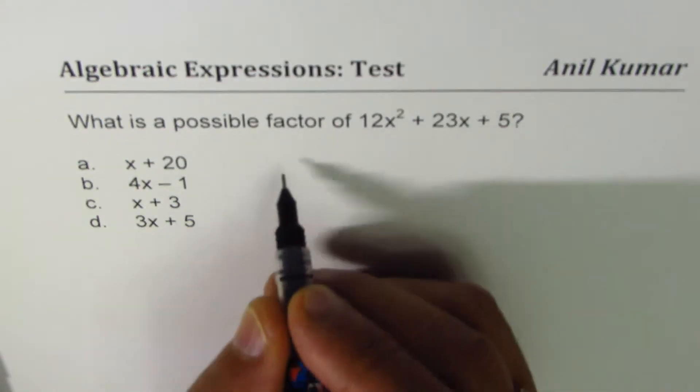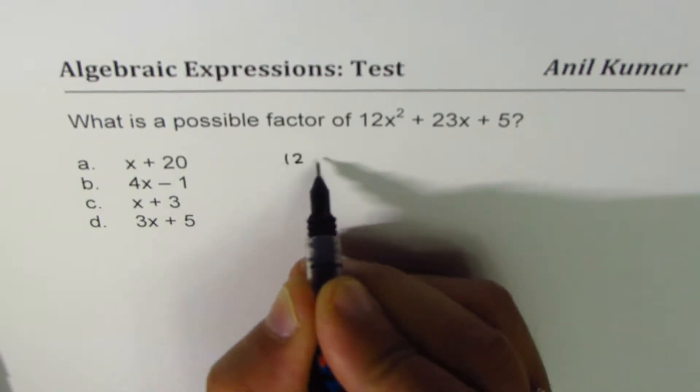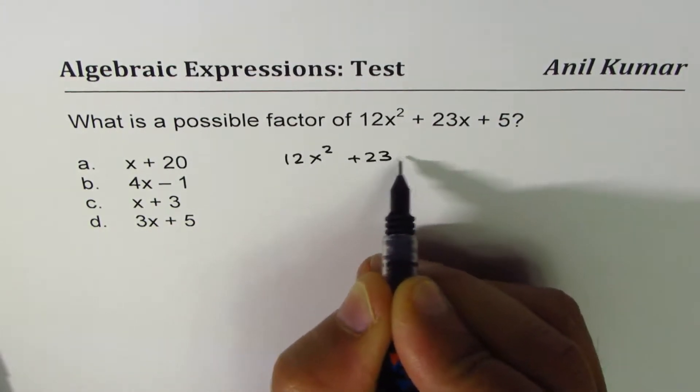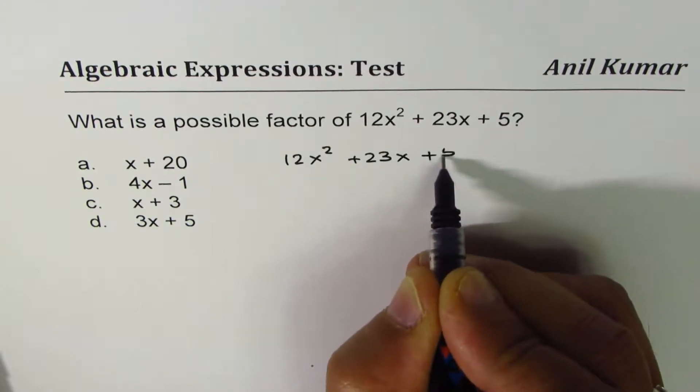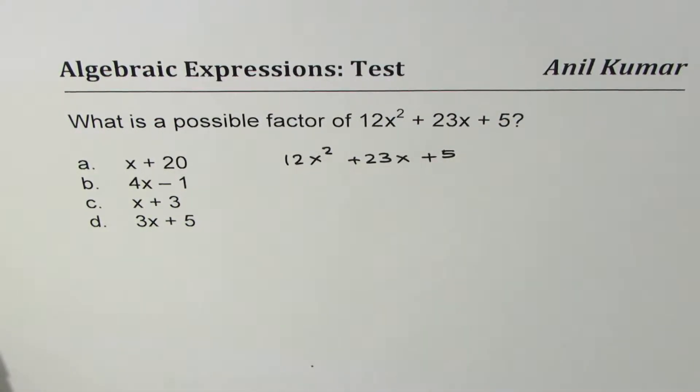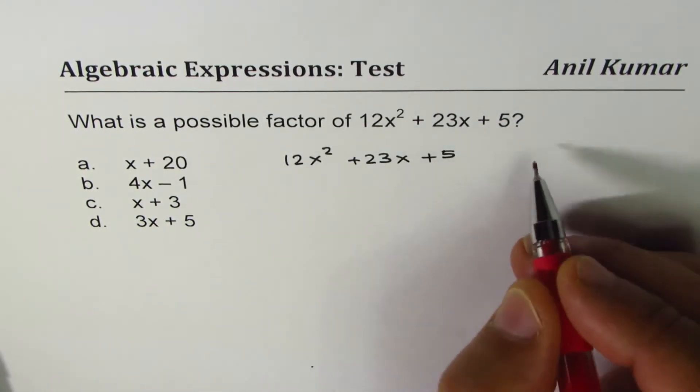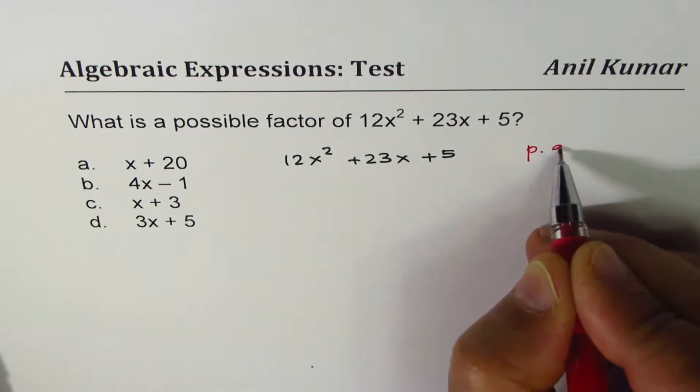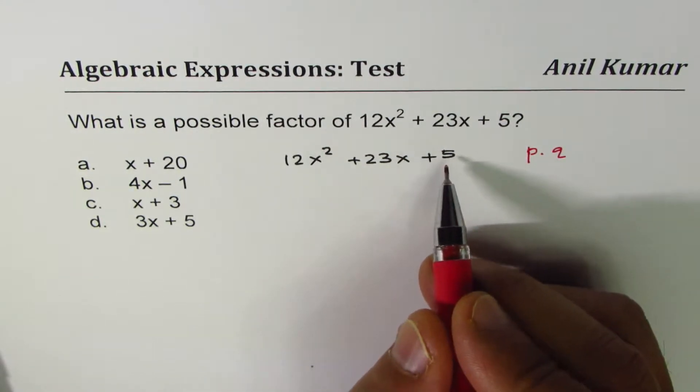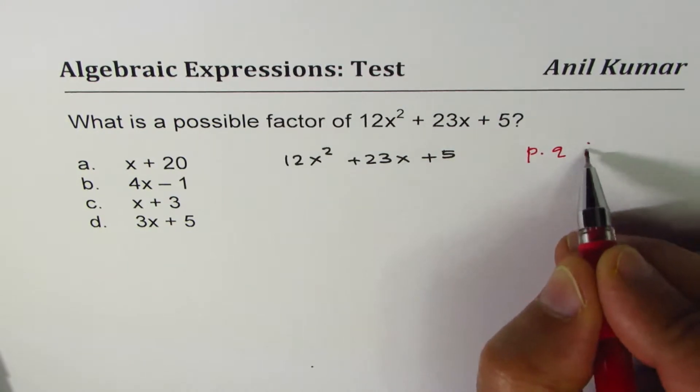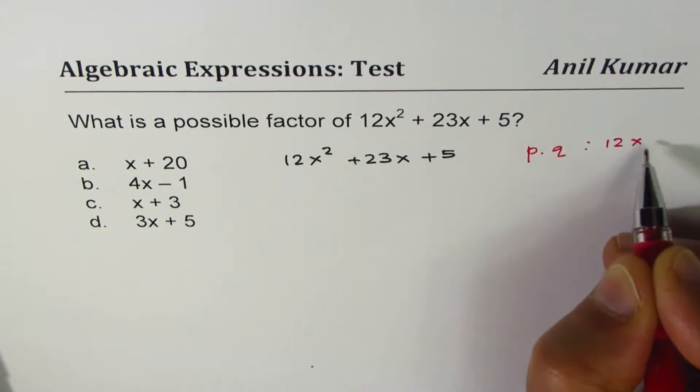So what we have here is 12x squared plus 23x plus 5. We are looking for two numbers whose product is, let's say P and Q are two numbers, whose product is 12 times 5. You could write 60 or you could write 12 times 5.